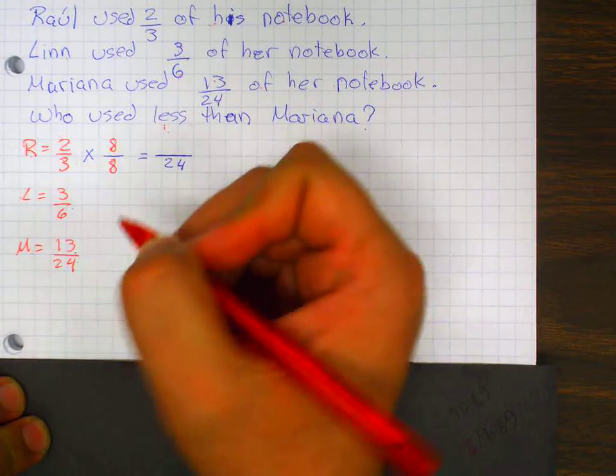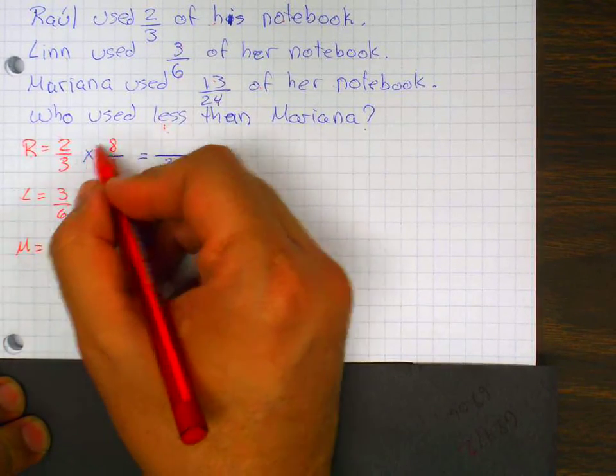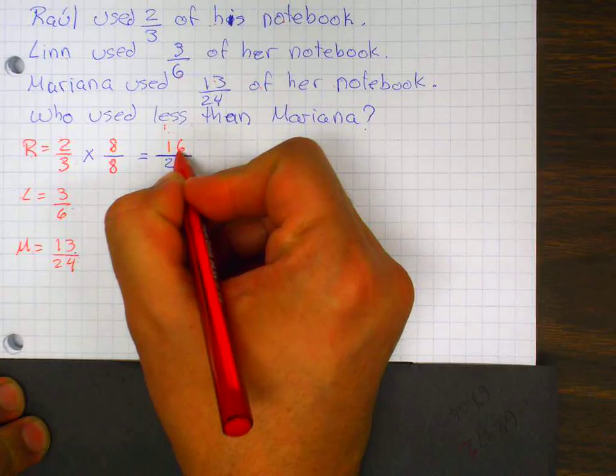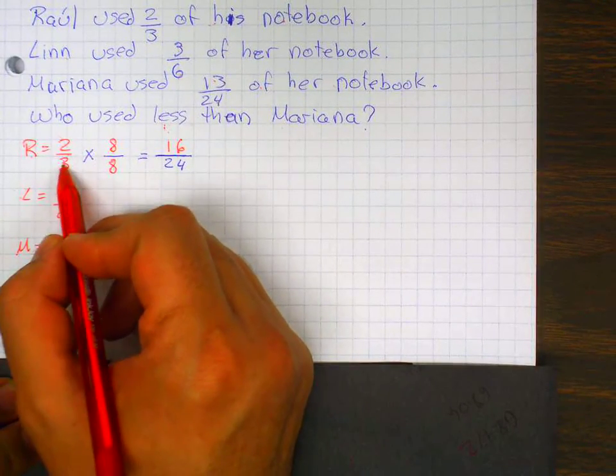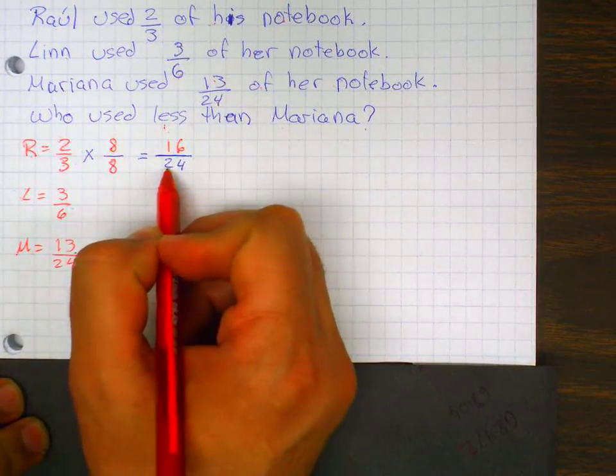Three times eight is twenty-four. And I need eight in the numerator. Two times eight is sixteen. So an equivalent fraction for two-thirds is sixteen twenty-fourths.